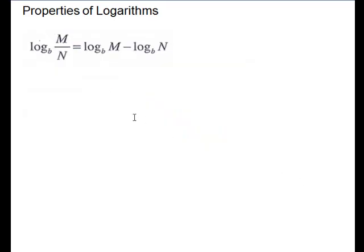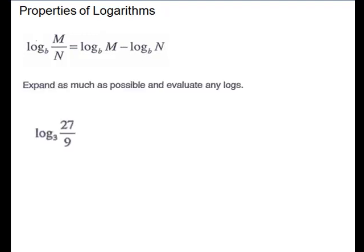Our next property to help us simplify is: if we have the log of a quotient, it is equal to the difference of the logs. You take the log with the same base of the numerator minus the log of the denominator. For our next problem we have log base 3 of 27 divided by 9.